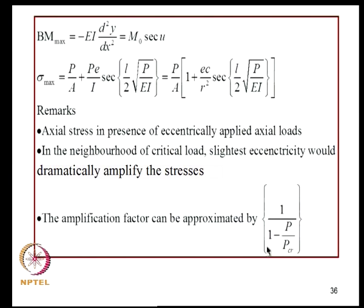The magnification factor sec(U) can be approximated as 1/(1 − P/P_critical) by expanding the trigonometric term. This gives reasonable accuracy for acceptable ranges of P near P_critical.